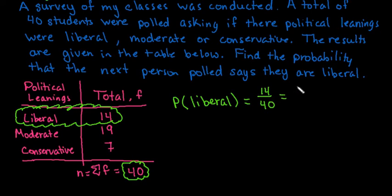You could also reduce it to 7 out of 20. Again, in some situations, it's better to leave it as an unreduced fraction, just because that gives you your n or your sample size, so you know exactly how many people were polled.